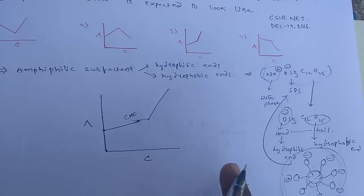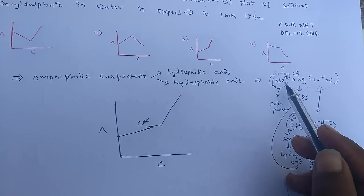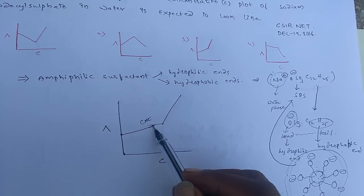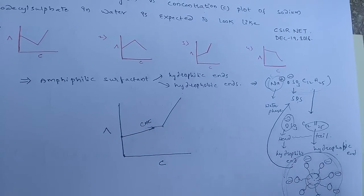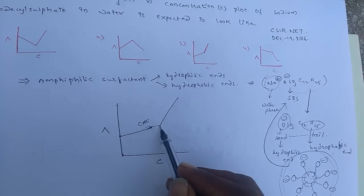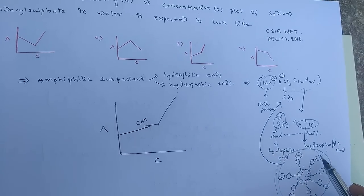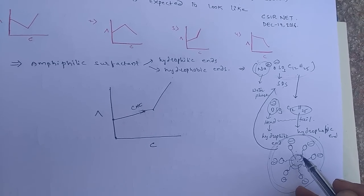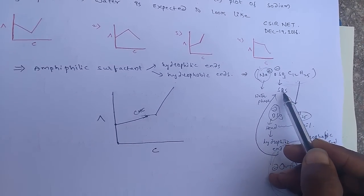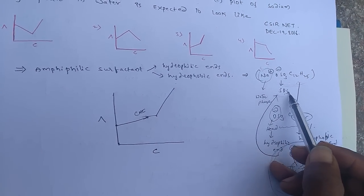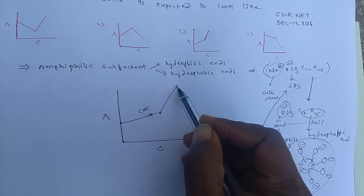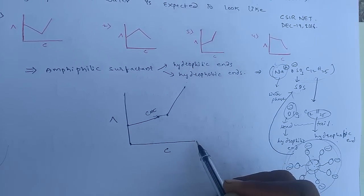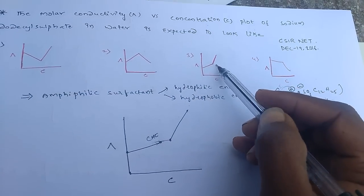So to summarize the graph: when SDS is added to water, molar conductivity increases due to ion formation. After reaching the CMC, the increase slows as micelles form. Then, with more SDS addition, micelles are disturbed and break into monomeric SDS anions, causing molar conductivity to increase sharply again. This behavior corresponds to graph option 3.